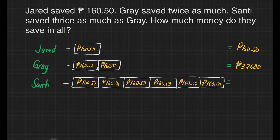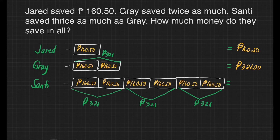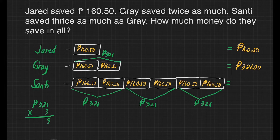We can also say that each of Gray's boxes is 321 pesos. In order to know the money saved by Santi, we just multiply 321 times three. Three times one is three. Three times two is six. Three times three is nine. It means Santi saved 963 pesos.